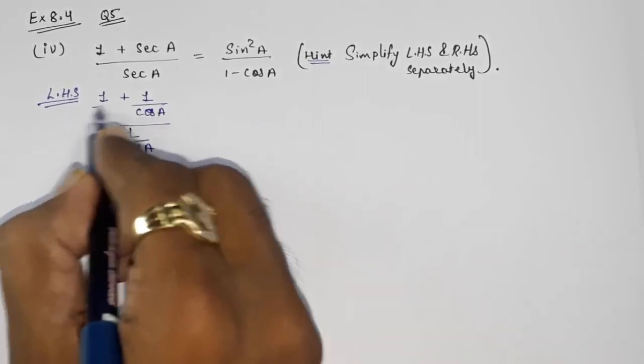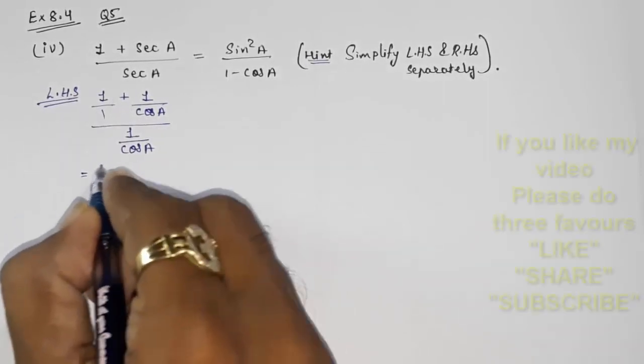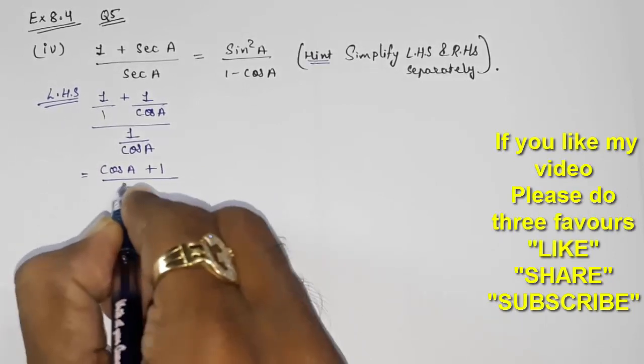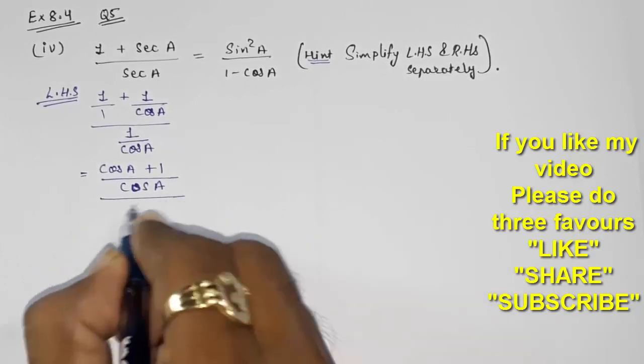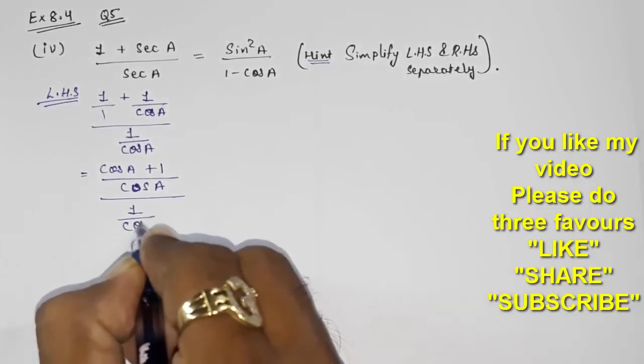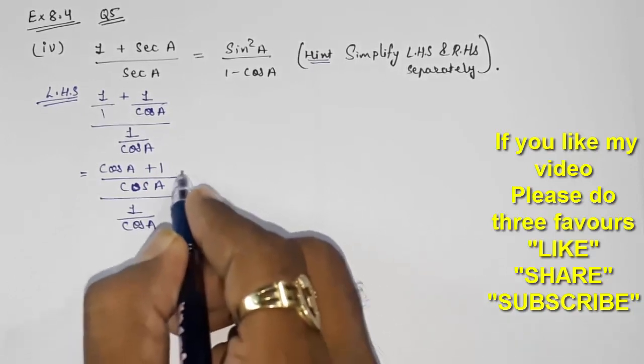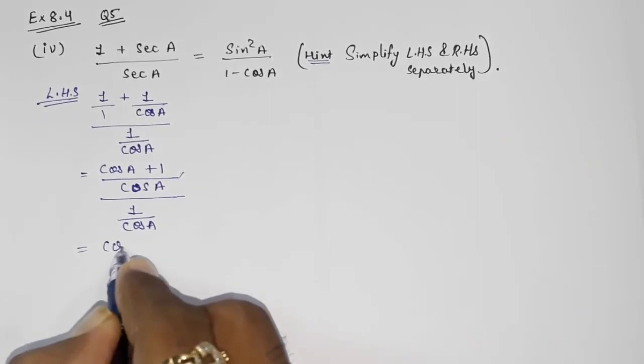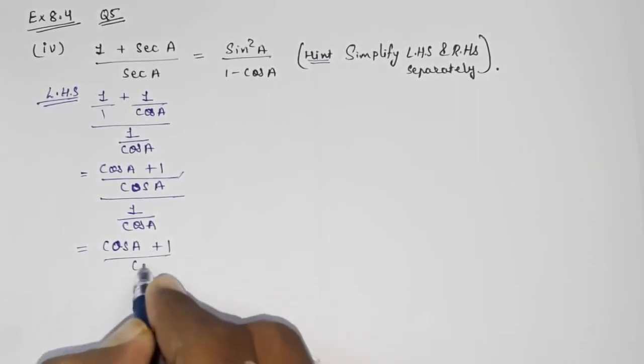Now what will happen here, we have to take out LCM. This is in fraction, so this will become cos A plus 1 upon cos A, and upon, so 1 by cos A. Now fraction upon fraction, so what will happen, this will go here in multiplication and that will also become reciprocal. So cos A plus 1 upon cos A into cos A by 1.